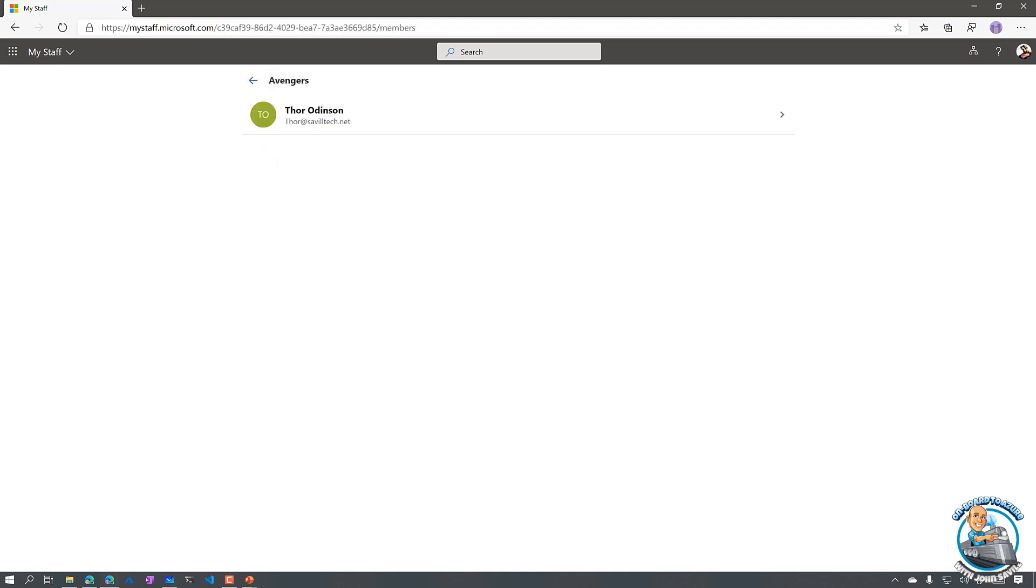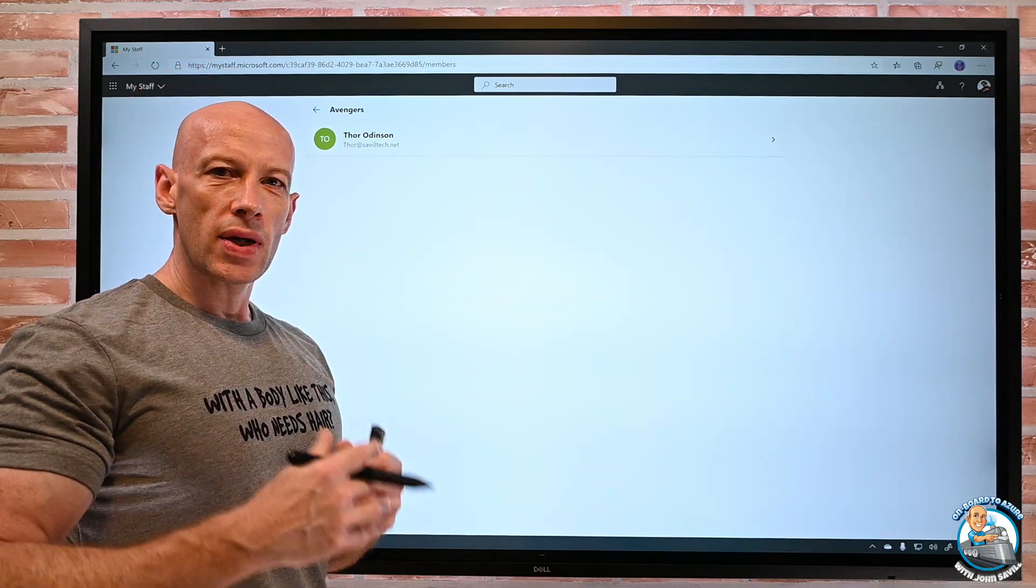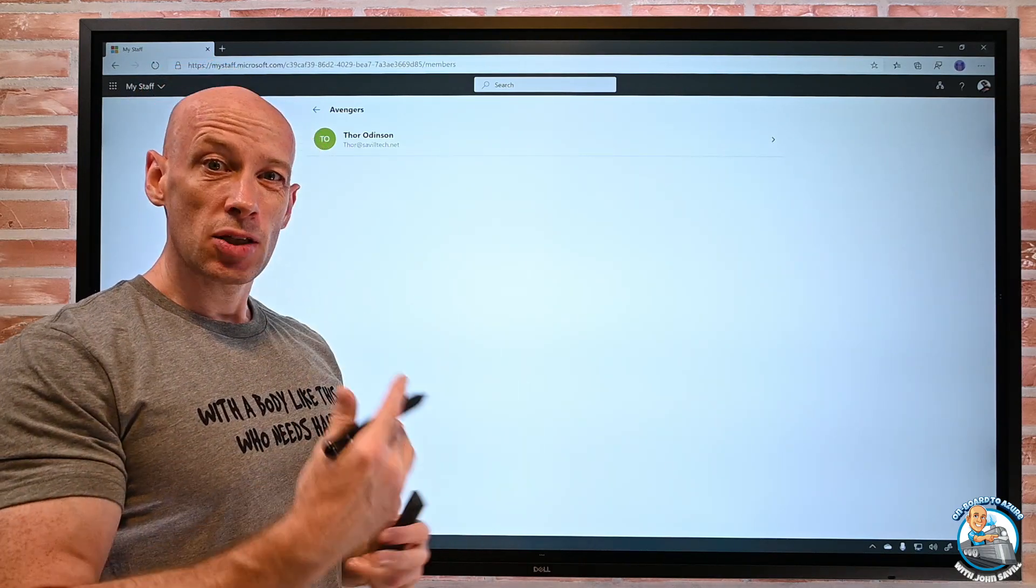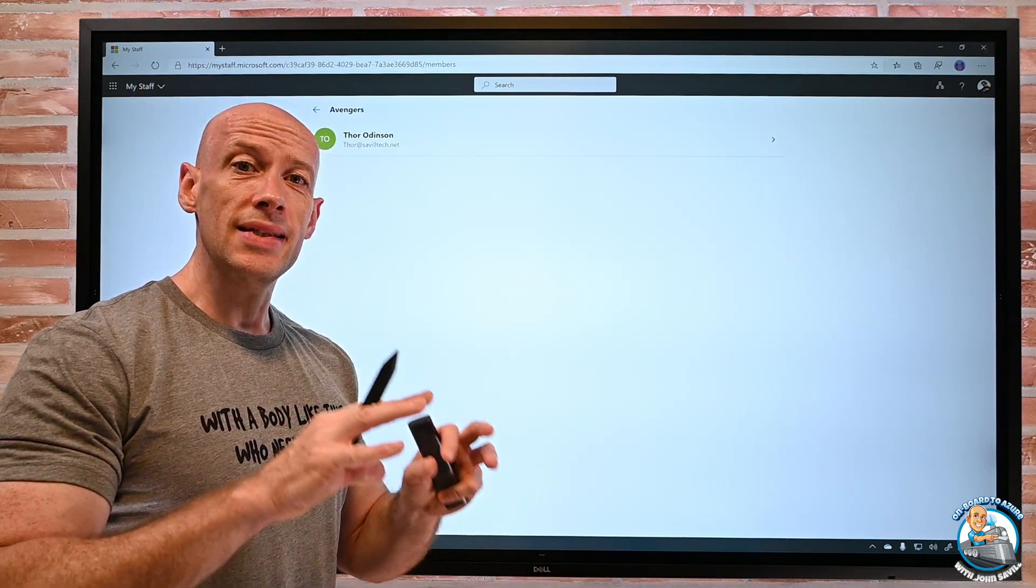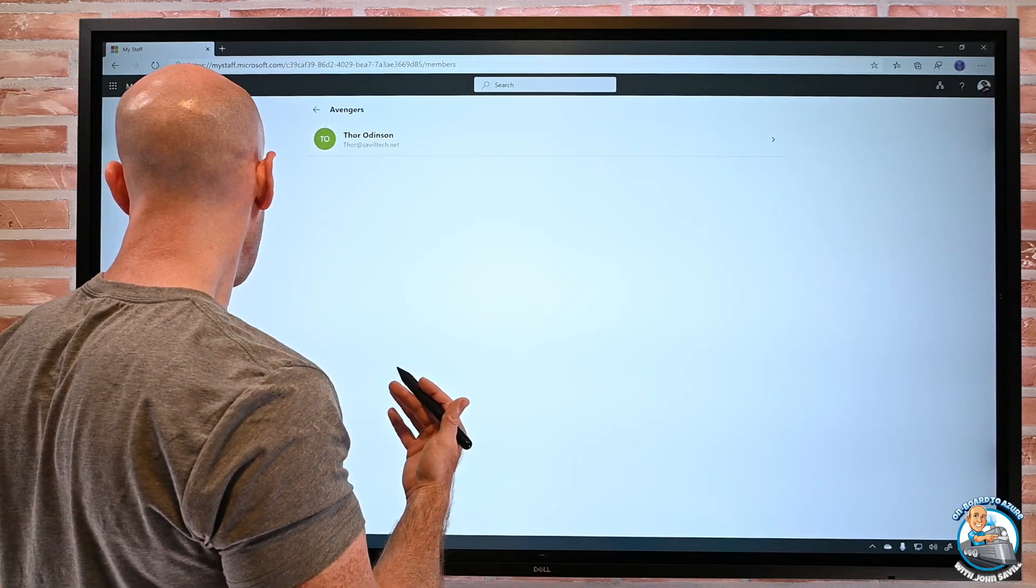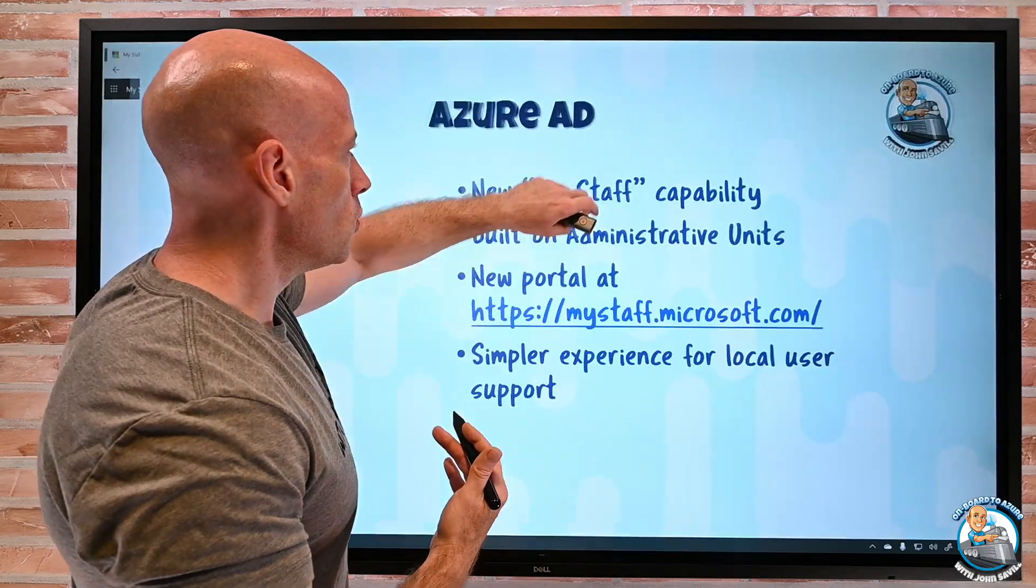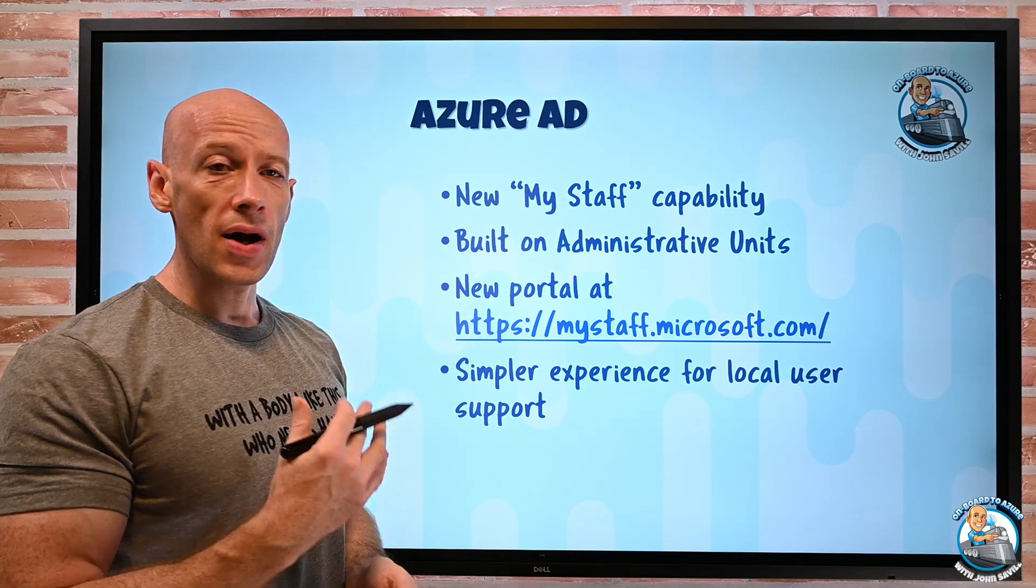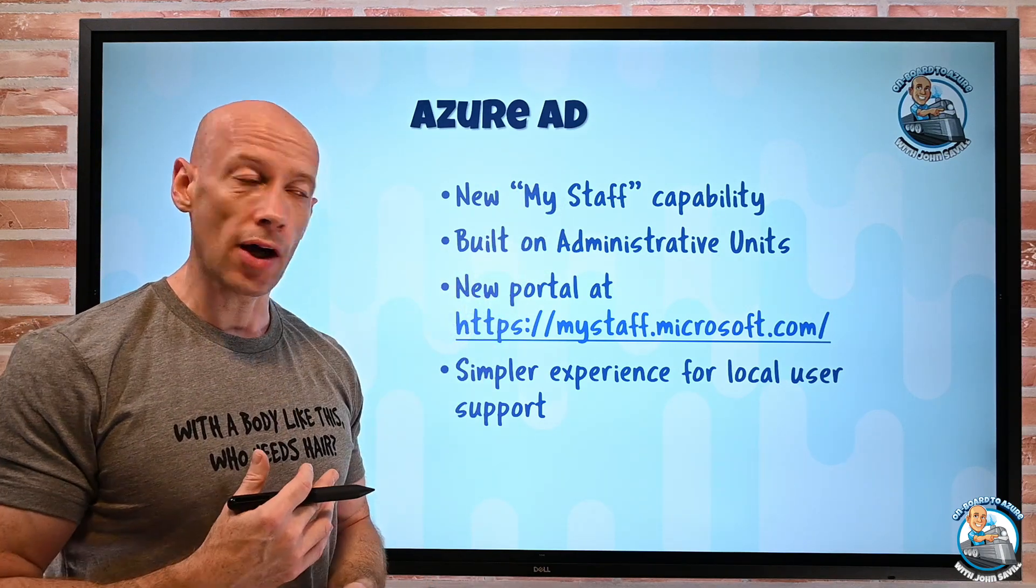If I don't have permission and I try and go to a different administrative unit, I can't do anything. I cannot reset those passwords. I don't have the permission. So we can see it's giving us that nice experience if I just need to do some very basic management for people at my office. So that is the new My Staff. It's in preview, so you have to go and turn that on.